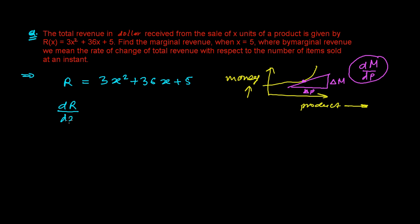So dR over dx is going to be 3, and then derivative of X squared, that is 2x, and 36x, 36 is a constant, and derivative of X is 1, derivative of 5, that is 0.